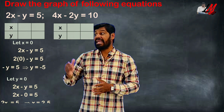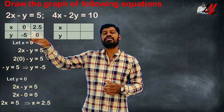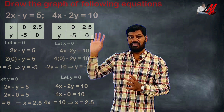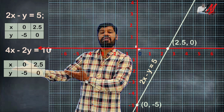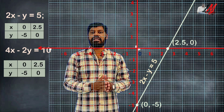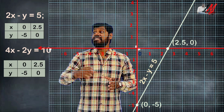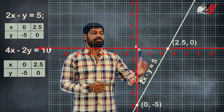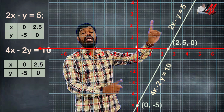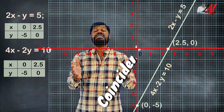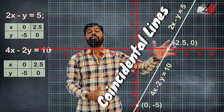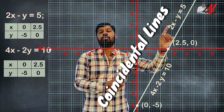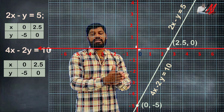We draw a table for both equations with x equals 0 and y equals 0. For the first equation 2x minus y equals 5, we already have the points. For the second equation, the same points result because it is a multiple of the first. When we plot these, the two lines overlap completely — these are coincidental lines, so there are infinitely many solutions.